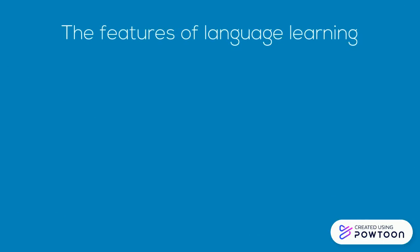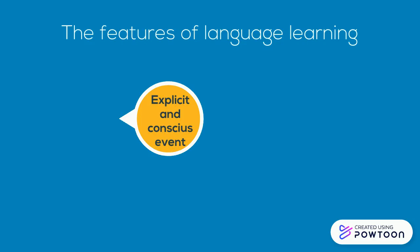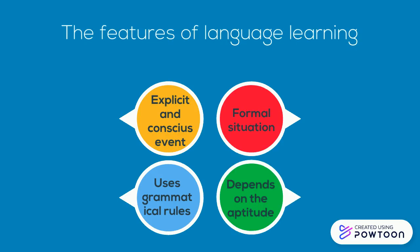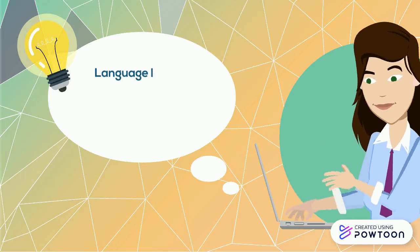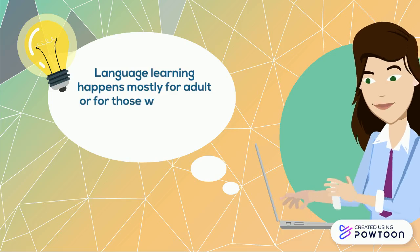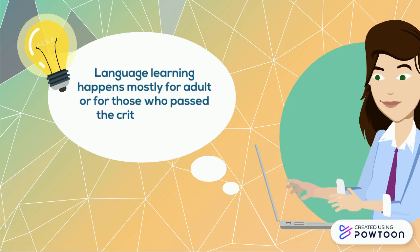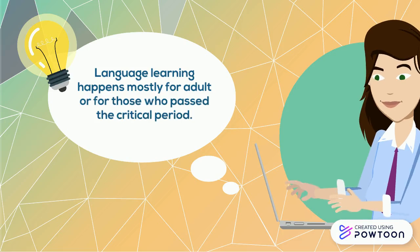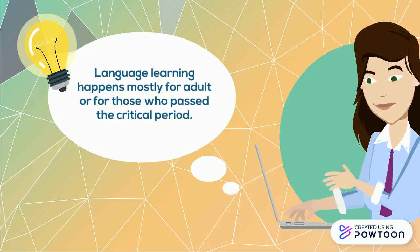Language Learning is an explicit and conscious event. It also uses grammatical rules. Apart from that, it occurs in a formal situation like in a classroom, and it also depends on the attitude. Language Learning happens mostly for adults or for those who have passed the critical period. Their cognitive development cannot be equal to a child, and there are obvious differences among children and adults, especially for Second Language Learning.